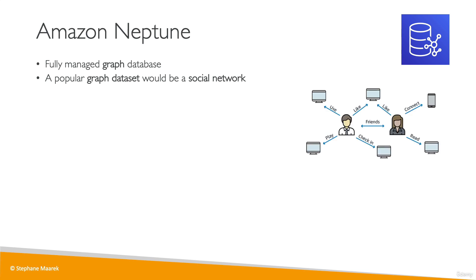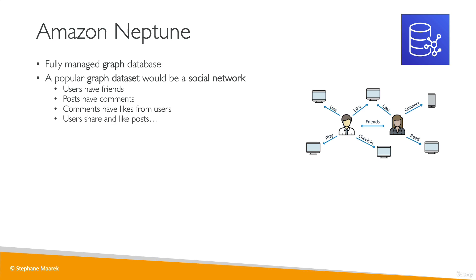If we look at a social network, people are friends, they like, they connect, they read, they comment and so on. Users are friends, posts will have comments, comments have likes from users, users share and like posts. All these things are interconnected and so they create a graph.